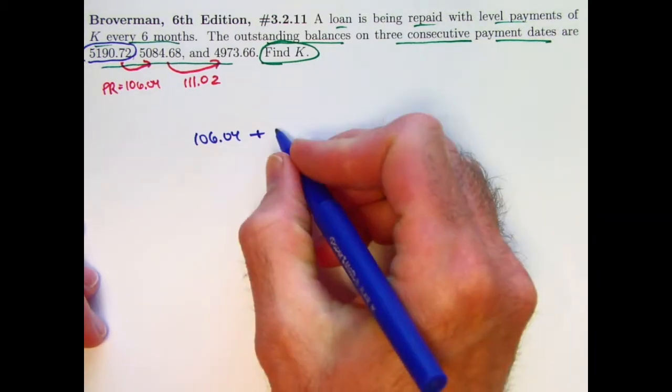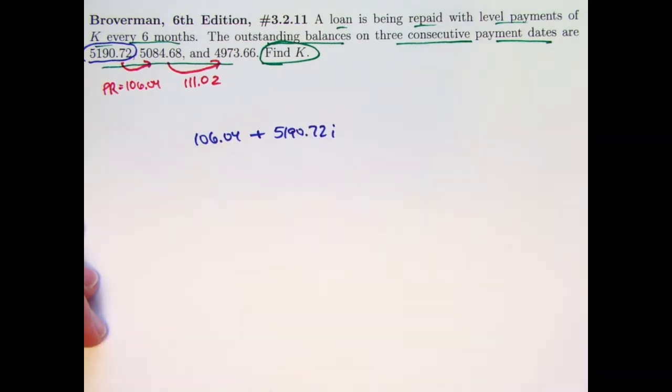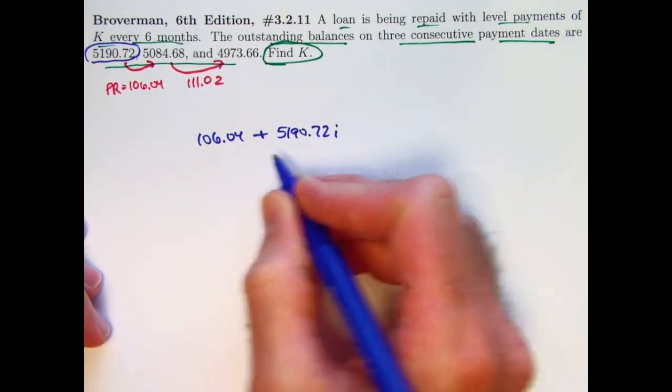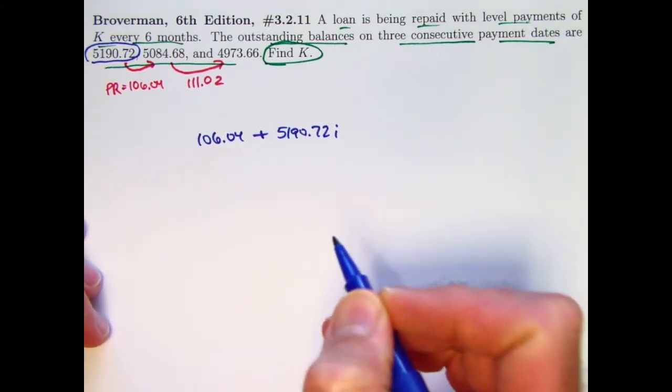5190.72 times I. So that should be the payment for that first thing, a principal reduction component and an interest component.